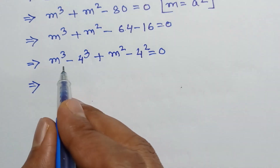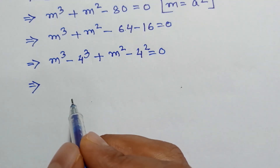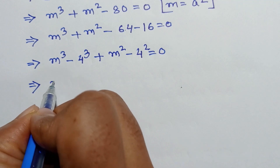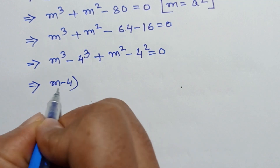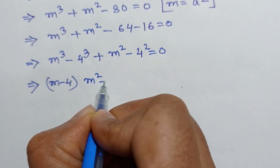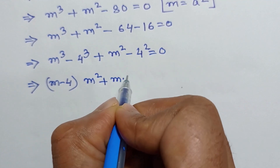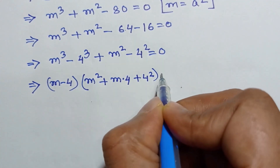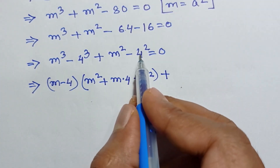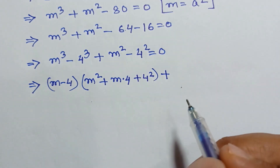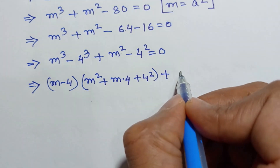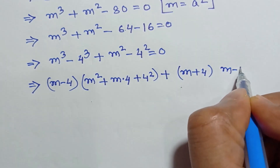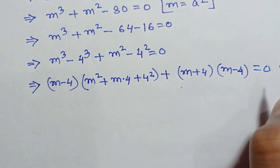We apply the formula a³ − b³ = (a − b)(a² + ab + b²) to factor m³ − 64 as (m − 4)(m² + 4m + 16). For m² − 16 we apply the difference of squares formula a² − b² = (a + b)(a − b), giving (m + 4)(m − 4) = 0.